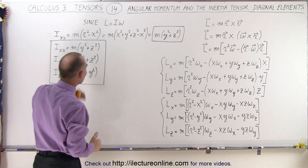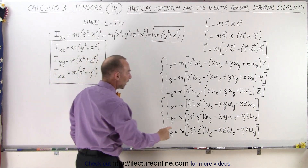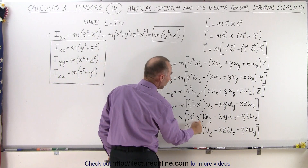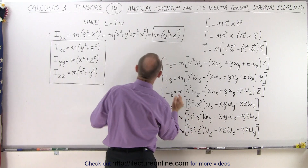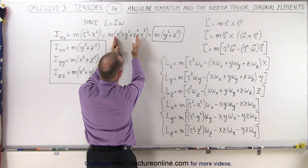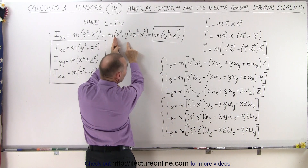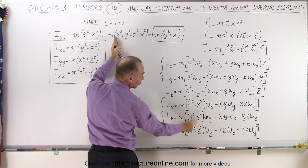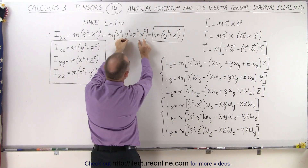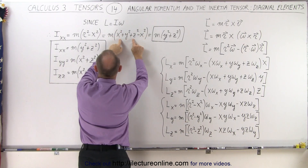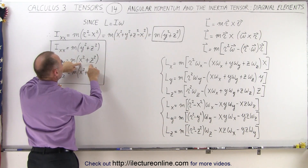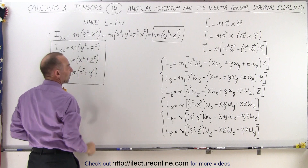We do the same for the y-axis. Here we have r squared minus y squared. Since r squared is x squared plus y squared plus z squared, but in this case it's minus y squared, the y squareds cancel out, and we end up with m times x squared plus z squared.